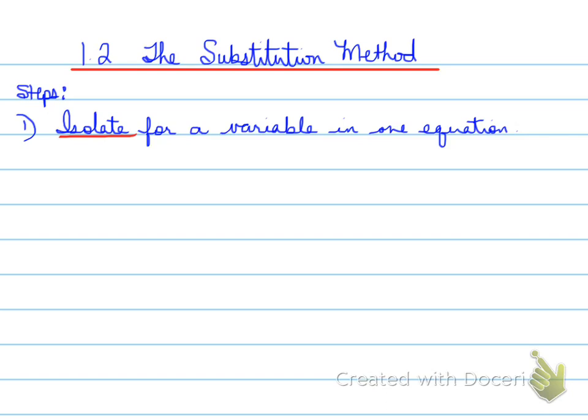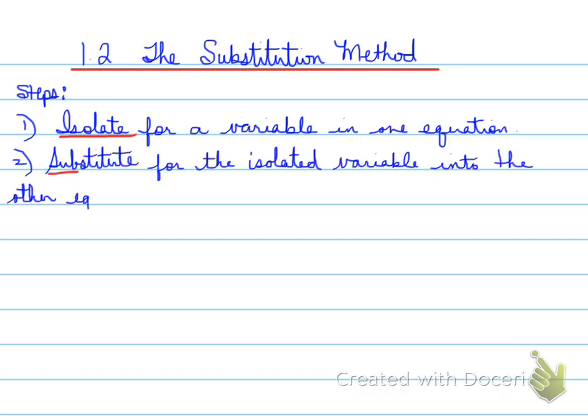Step two is to sub. Sub means to substitute. You substitute for the isolated variable into the other equation — the equation that you didn't isolate for — to solve for the remaining variable. We sub what we isolated into the other equation and solve for the remaining variable. For example, if we isolate in one, we sub in two.